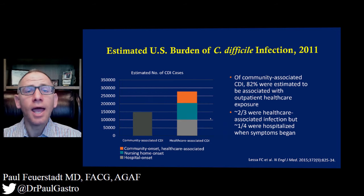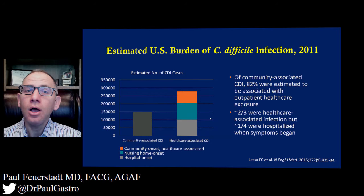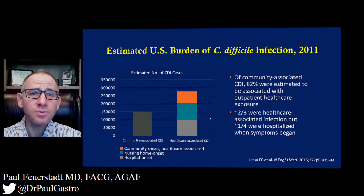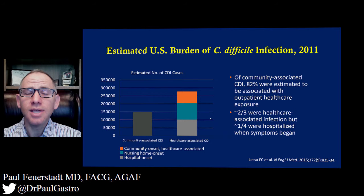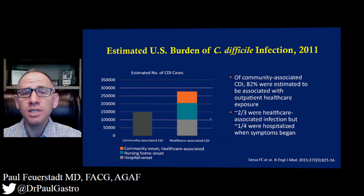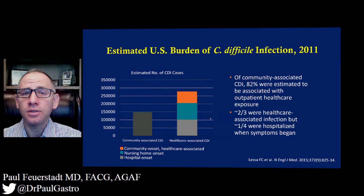Of the group that had healthcare-associated infection, only 25% had an onset in the hospital, implying that the majority of those patients actually had the onset after they were discharged from the hospital.